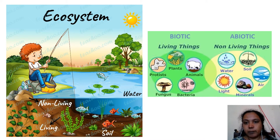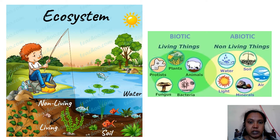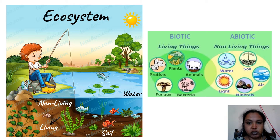An ecosystem comprises of both the biotic and the abiotic components. The biotic components are the living things. As you will see in the picture on the left side, it will include all the plants, the trees, grasses, the water plants, animals, which is the fish, bacteria, fungus, proteins and including us, the human beings.